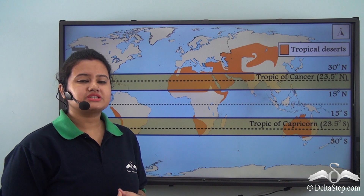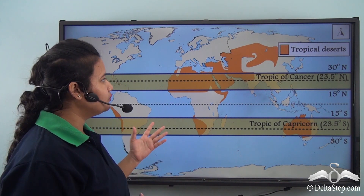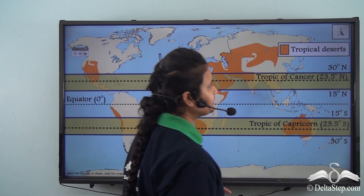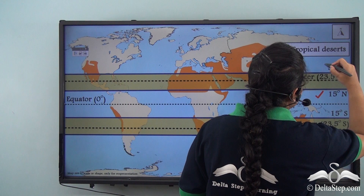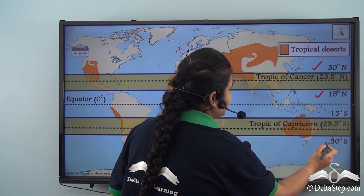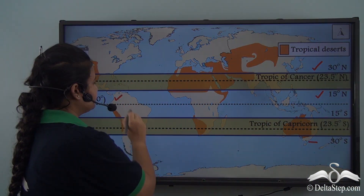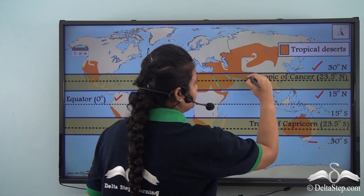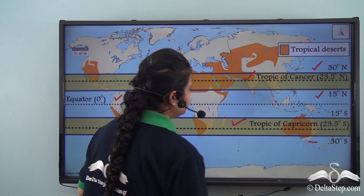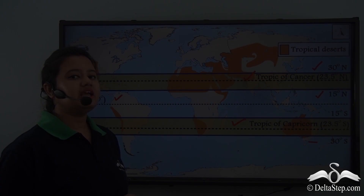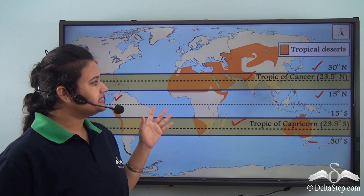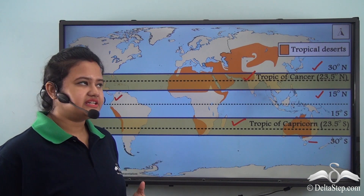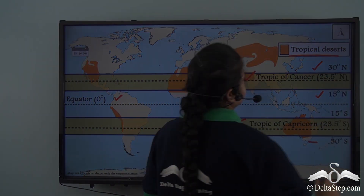This world map shows the location of deserts in the world. Here we can see that the deserts are located between 15 degrees to 30 degrees north and south of the equator. Also, we can see that both the tropics — that is, the Tropic of Cancer and Tropic of Capricorn — pass through these deserts. Thus, we find that these hot deserts are located in the tropical zone, and therefore these deserts are also known as tropical deserts.